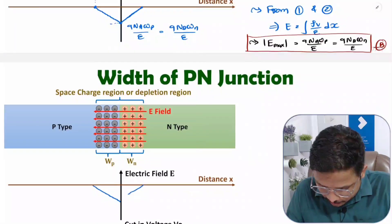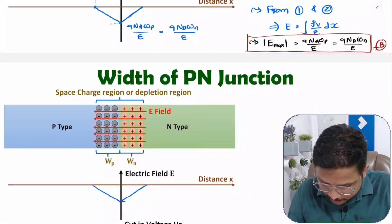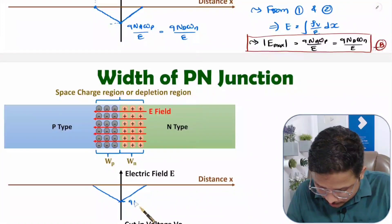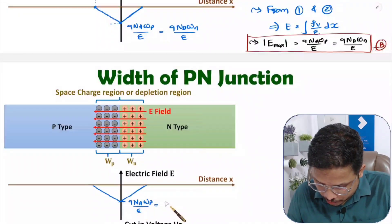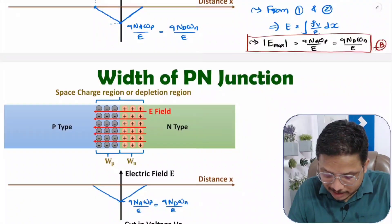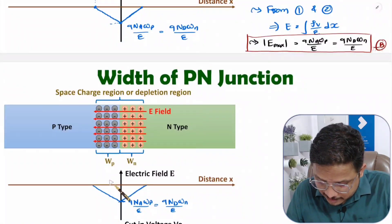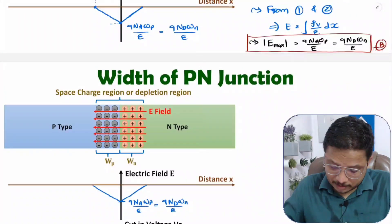The value of this electric field is: q·Na·Wp / ε, which equals q·Nd·Wn / ε. It has a negative value because we are considering one direction as positive but the electric field is acting in the opposite direction.